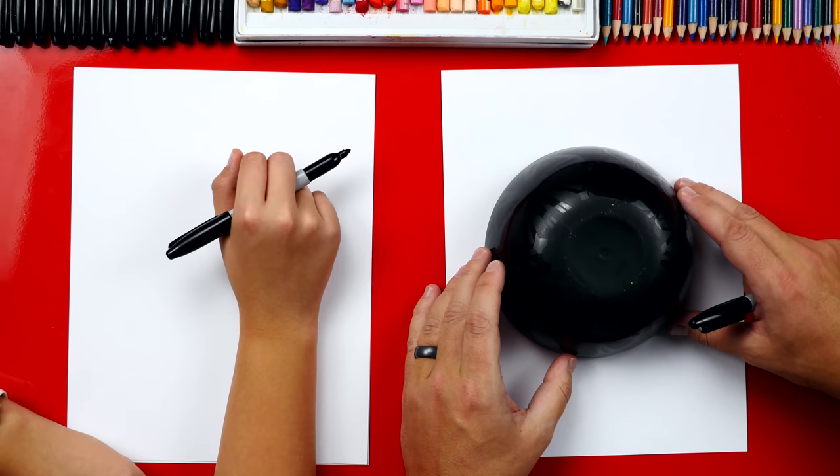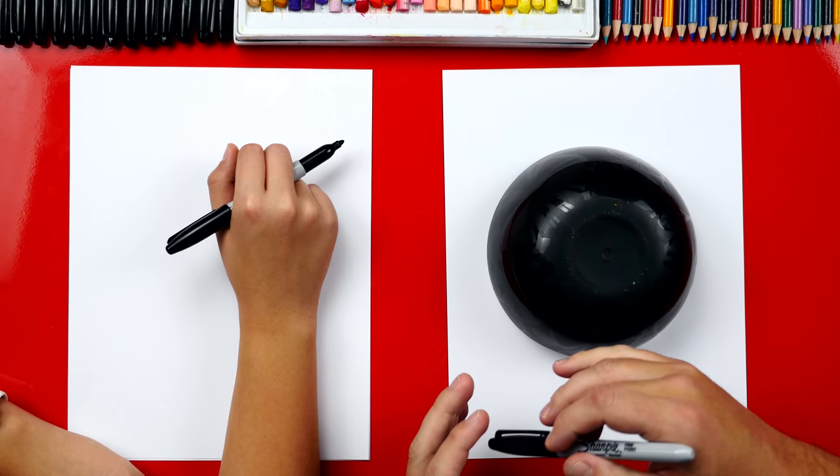Now we're first gonna start by putting our bowl right in the middle of our paper. Now if you don't have a bowl or something to use as a template you can actually just do this freehand. But we like using the bowl because then you get a perfect circle.